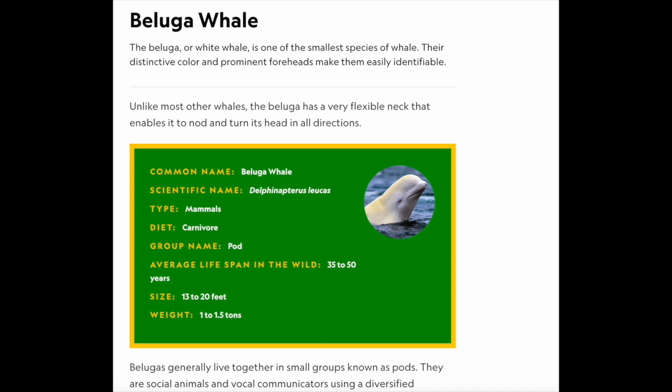Today's topic will be on beluga whales. How exciting! So, to start off, I have an article from National Geographic. Beluga whale. The beluga, or white whale, is one of the smallest species of whale. Their distinctive color and prominent foreheads make them easily identifiable. Unlike most other whales, the beluga has a very flexible neck that enables it to nod and turn its head in all directions.